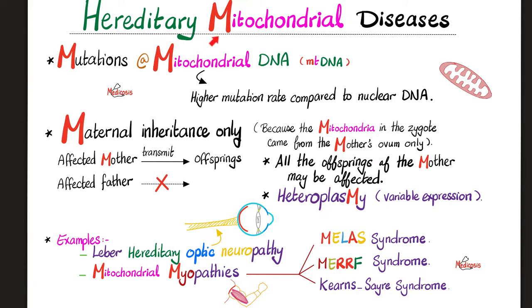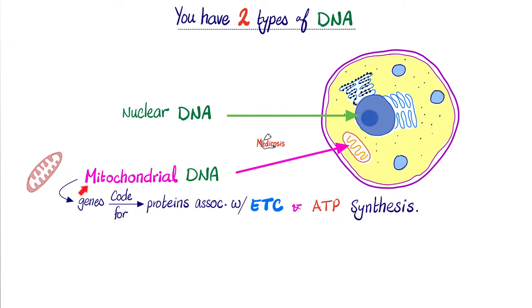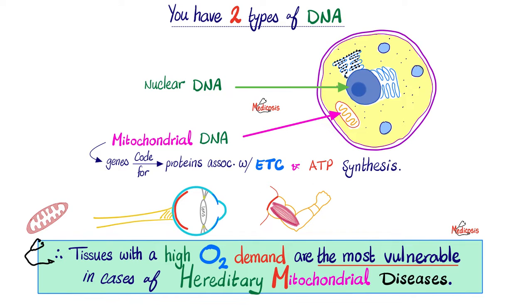Examples of hereditary mitochondrial diseases include the infamous Leber hereditary optic neuropathy, and the mitochondrial myopathies, which include MELAS syndrome, MERRF syndrome, and Kearns-Sayre syndrome. Normally, the mitochondrial DNA contains genes that code for proteins associated with the electron transport chain and ATP production. That's why in patients with hereditary mitochondrial diseases, the organs that are most active and most in need of ATP will suffer the most — the optic nerve, eyes, muscles, heart, and brain.